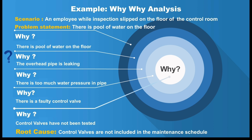Then we ask: why is the overhead pipe leaking? The answer is: because there is too much water pressure in the pipe. Then we ask again: why is there too much water pressure in the pipe? And the answer is: because there is a faulty control valve. Now we again ask: why is there a faulty control valve?